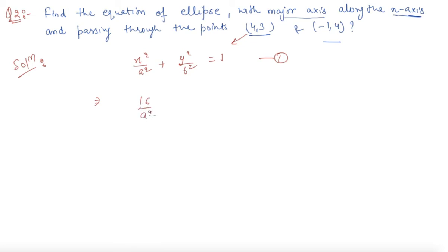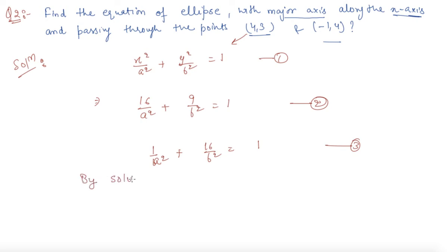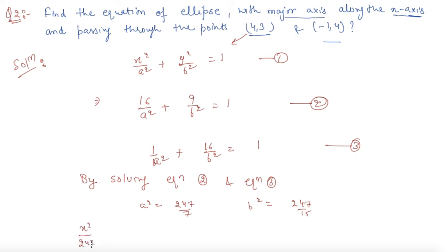Substituting the first point, we get 15 / a² + 9 / b² = 1 — this is equation 2. Putting the second point (−1, 4) into the equation, we get 1 / a² + 15 / b² = 1 — this is equation 3. By solving equations 2 and 3, the value of a² = 247 / 7 and b² = 247 / 15. So the final equation is x² / (247/7) + y² / (247/15) = 1, which simplifies to 7x² + 15y² = 247.